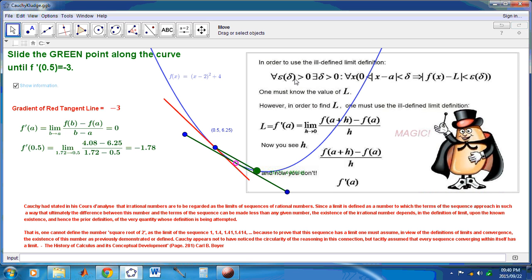So now, in order to use this definition here, one must know the value of L, this L here. But guess what? This L is derived from this formula over here, right? You see that? So, and this f(x) is actually this finite difference right over here. This f(x) is this finite difference right over here.